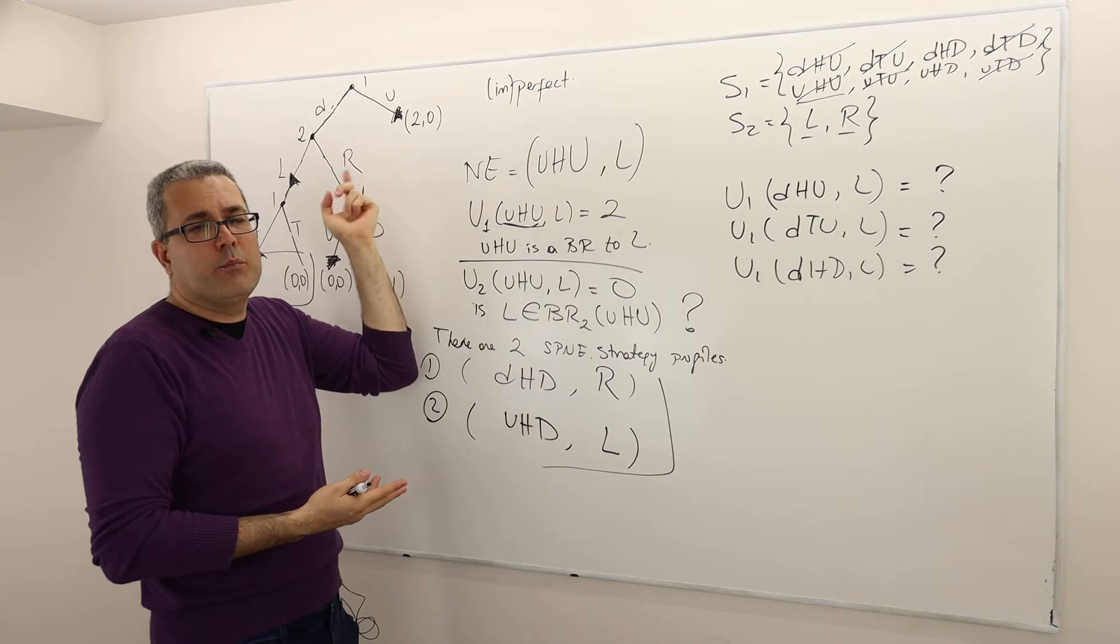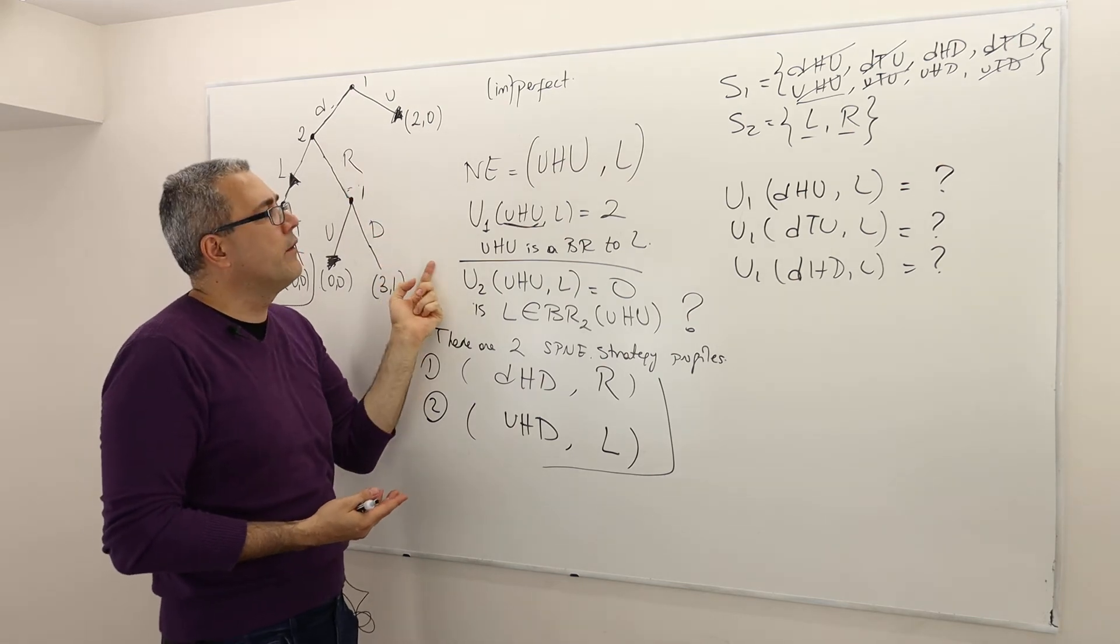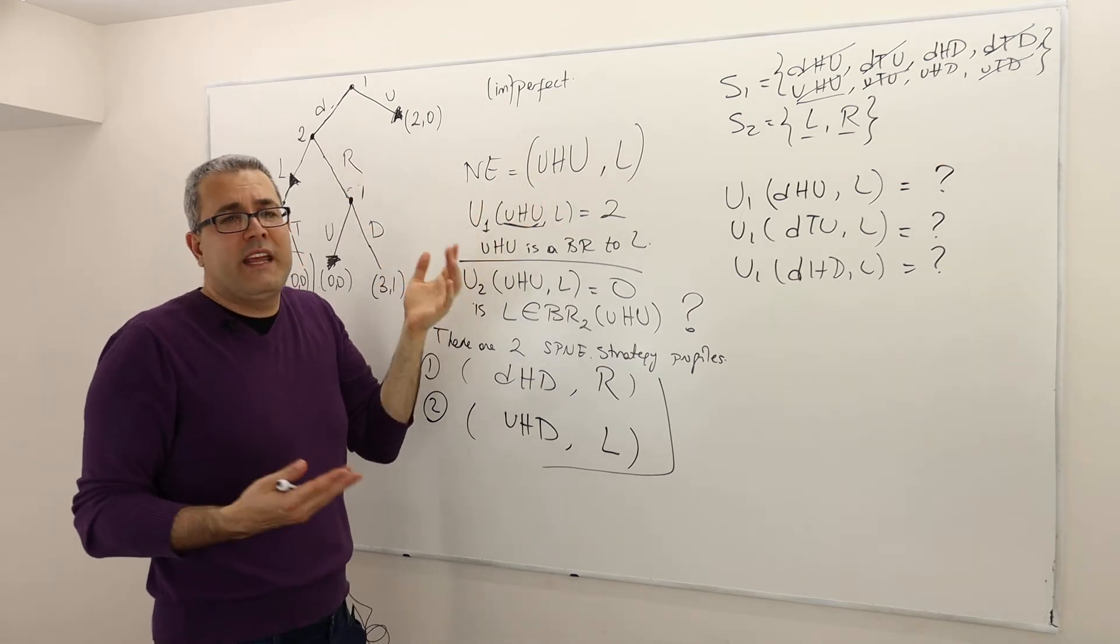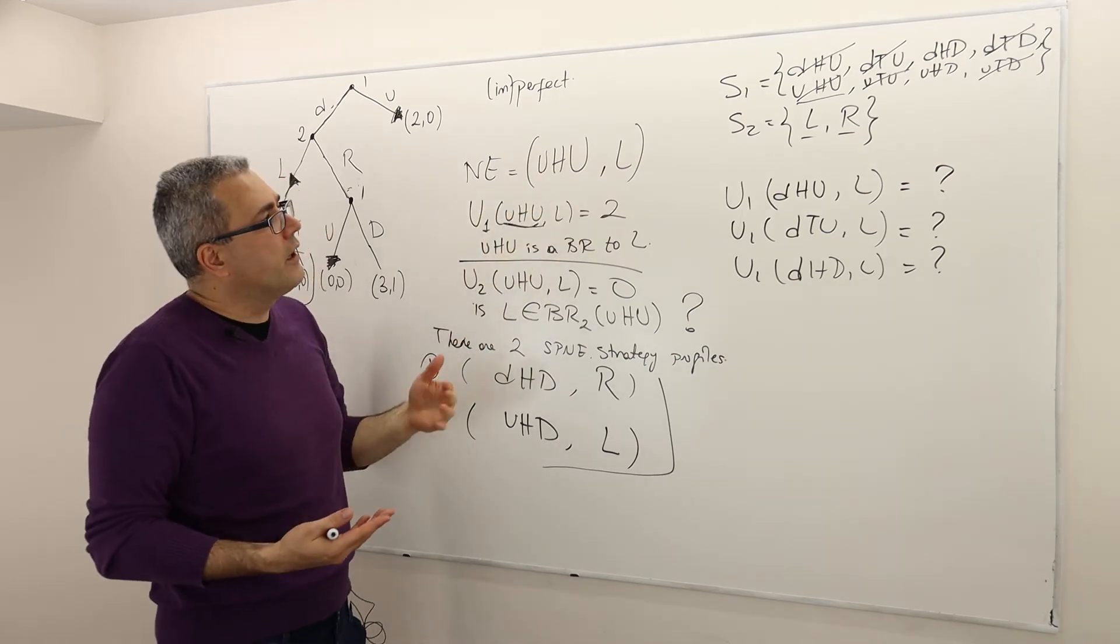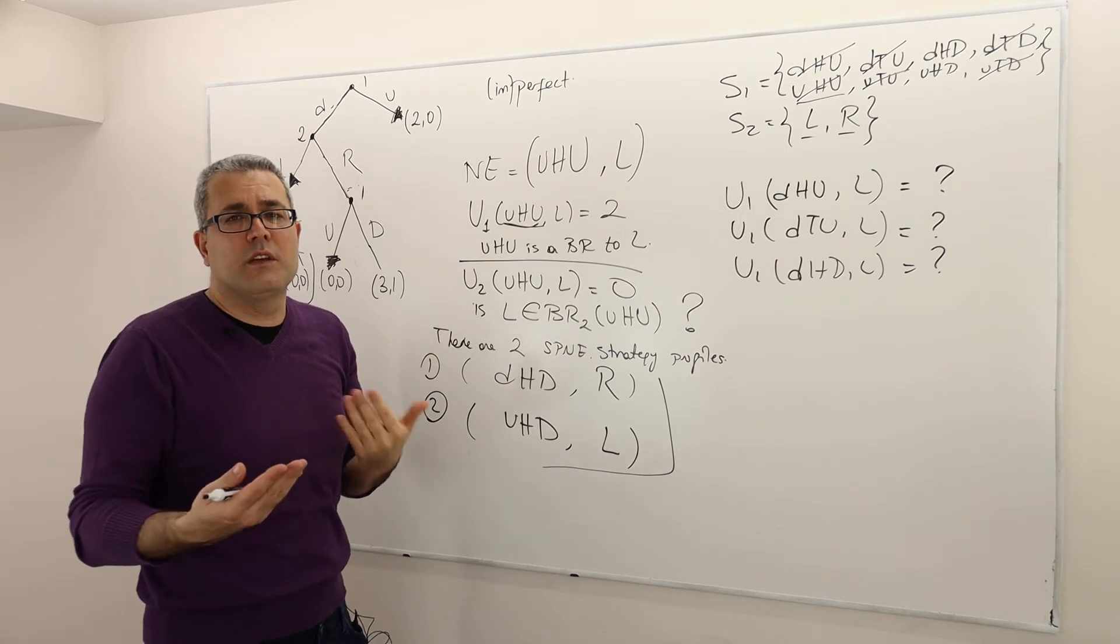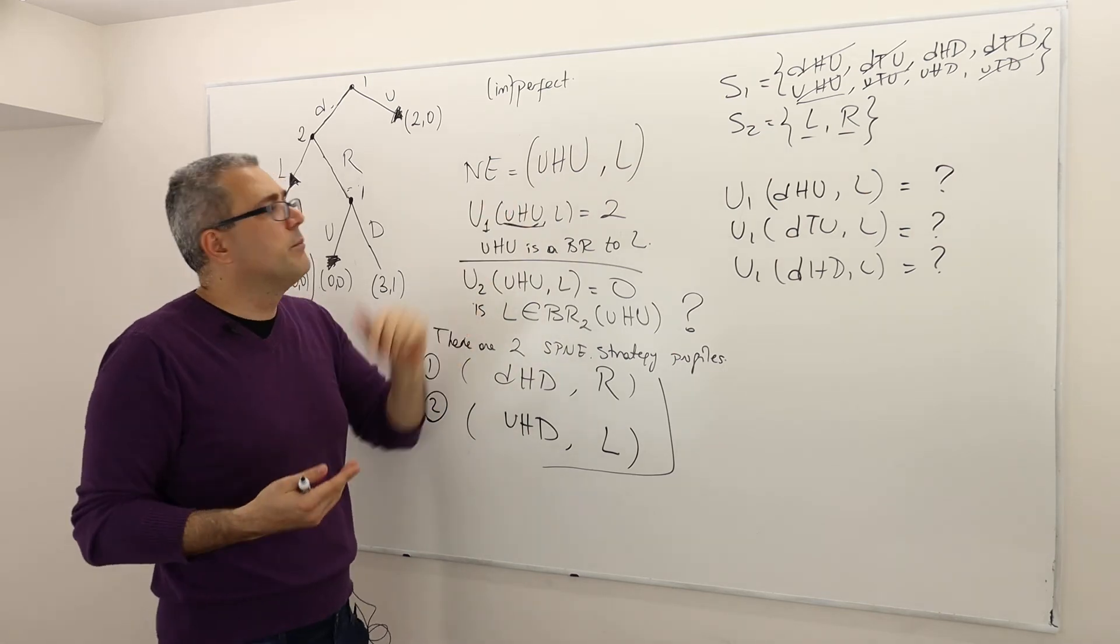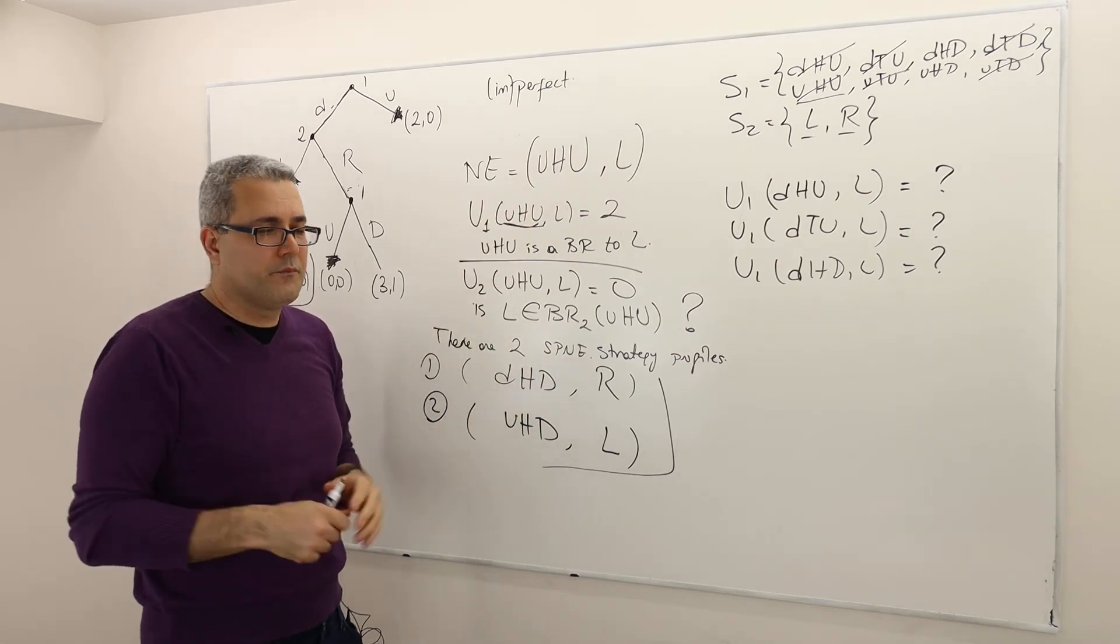And the explanation is, as we gave, there's no way player two can change her payoff. And previously, we already answered, is UHU best response to L? And the answer was yes. And so therefore, each player is best responding to each other. And hence, this must be a Nash equilibrium. Clear?